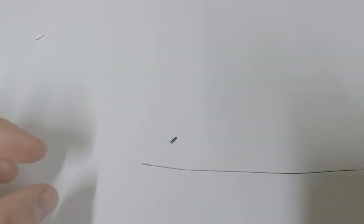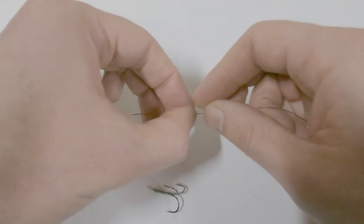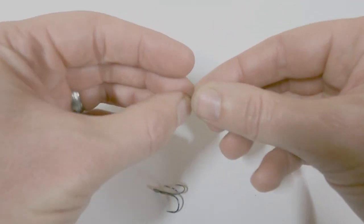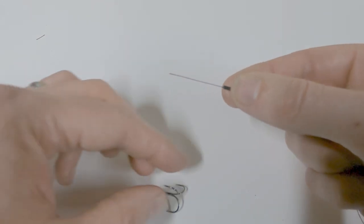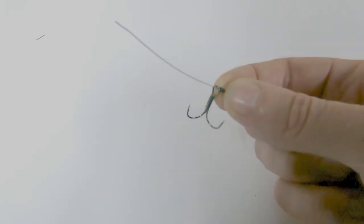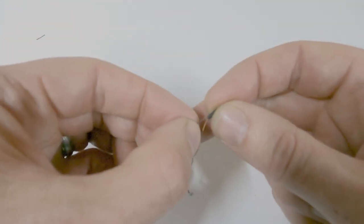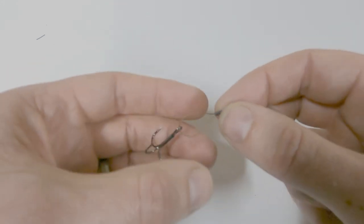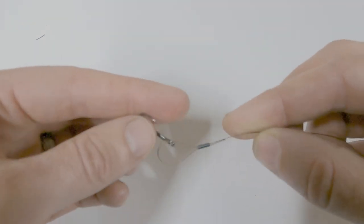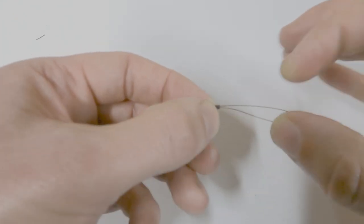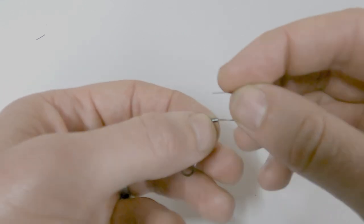So, get a crimp ready, and a treble hook. So, thread the crimp on first, through there like that, followed by a hook. And get the tag end through the crimp once like that. And then, for a bit of extra security, we go back through the crimp again.